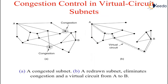Then we will see Congestion Control in Virtual Circuits. One technique that is widely used to keep congestion that has already started from getting worse is admission control. The idea is simple: once congestion has been signalled, no more virtual circuits are set up until the problem has gone away. Thus, attempts to set up new transport layer connections fail. Letting more people in just makes matters worse. While this approach is crude, it is simple and easy to carry out. In the telephone system, when a switch goes overloaded, it also practices admission control by not giving a dial tone.